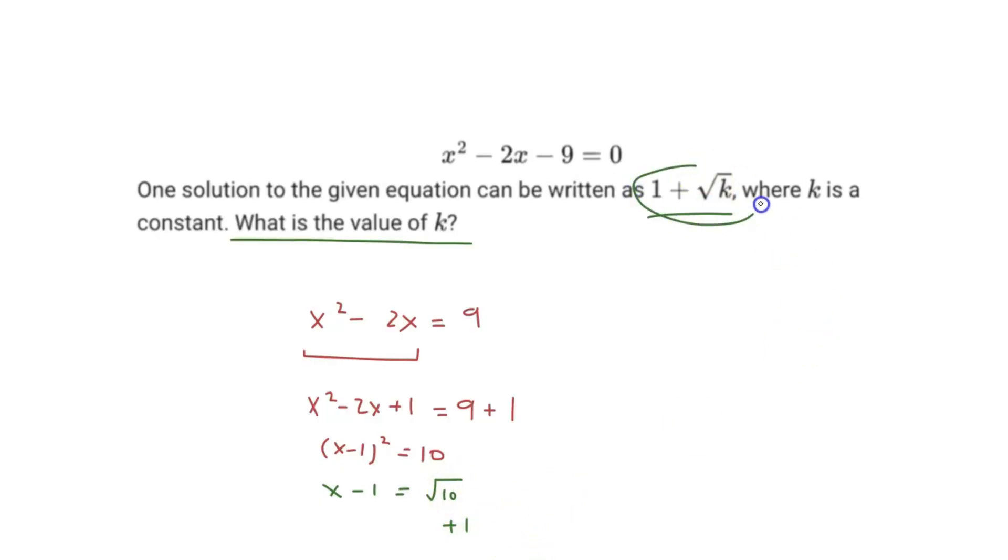And we can see that one of the solutions can be rewritten as 1 plus square root k. So in our case, we have the plus 1, and then we have the square root 10. So the value of k must be 10. And so that must be our answer.